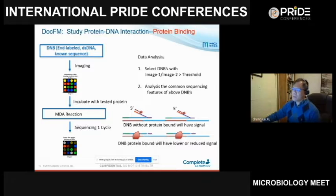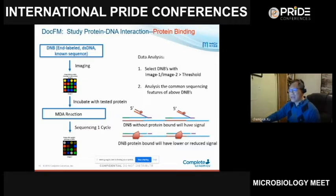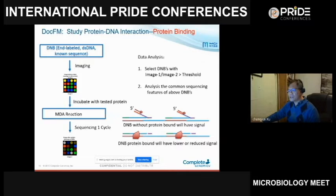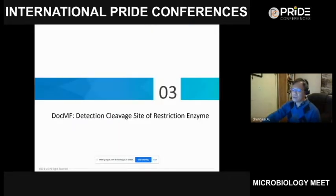For protein binding — without cleavage — we do something like a second synthesis. After incubation with the test protein, we do one more sequencing cycle. If no protein is binding to the DNB, we generate a good second strand and see a sequencing signal. If protein is bound to the DNB, we cannot generate a good second strand, so the DNB is identified by comparing image one and image two intensities.